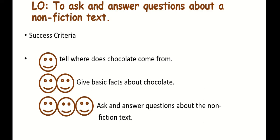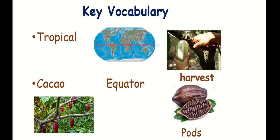Our learning objective for this lesson is to ask and answer questions about a nonfiction text. Our success criteria: you will get one star if you can tell where chocolate comes from, two stars for giving basic facts about chocolate, and three stars if you can ask and answer questions about a nonfiction text. Now let's explain our key vocabulary.